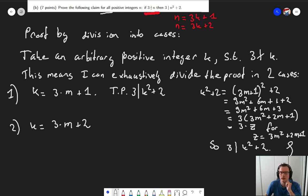So 3 divides k squared plus 2. And if you like, you can add a nice curly thing to indicate that you're done with this one. So there we go. The first half of our proof. For k equals 3m plus 1, we have shown that the statement holds.